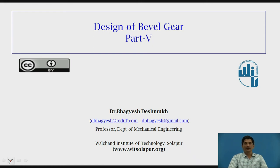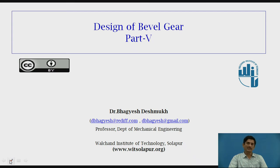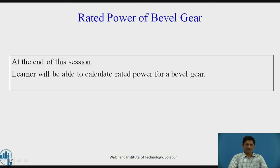We have seen how to derive the beam strength of a bevel gear and how to derive the wear strength of a bevel gear. We have also seen the different mounting methods such as overhang mounting of pinion and gear, straddle mounting of either pinion or gear, and straddle mounting of both pinion and gear. We have seen that straddle mounting of both gears is useful to avoid shaft deflection, making it a precise arrangement. Let us now see how to obtain the rated power of bevel gear.